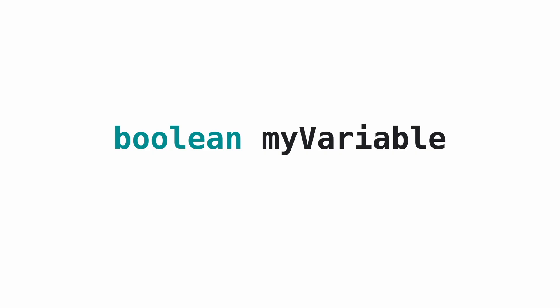In this lesson you will learn about variables, and I will teach you the most basic variable, which is the Boolean variable, capable of storing zero or one. A variable is a space in the memory of our Arduino where we can put in a value or read out the value. A variable needs two things: a type and a name.